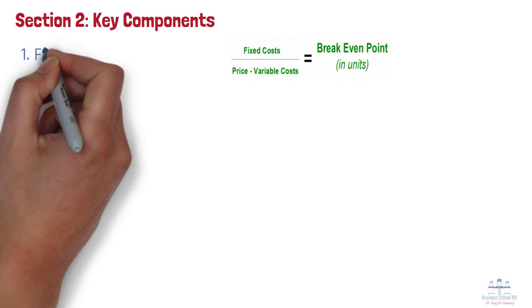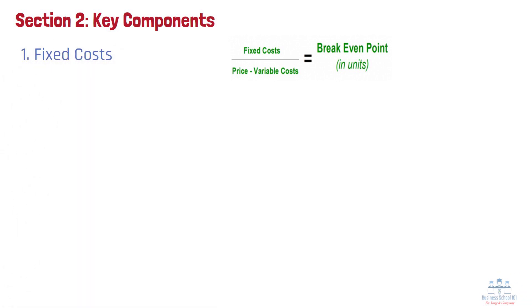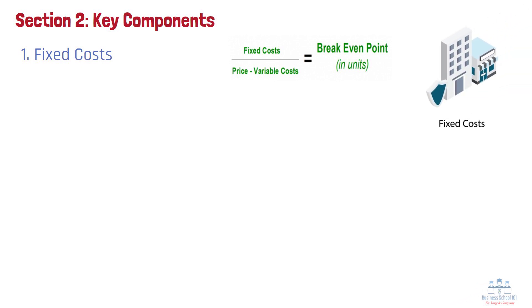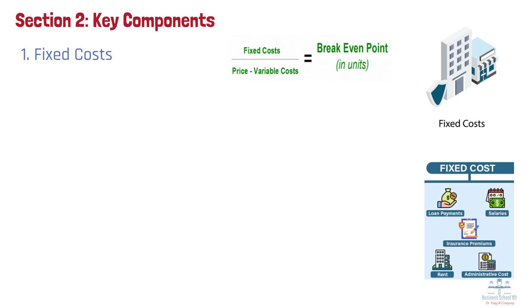Number 1: Fixed costs. Fixed costs are expenses that remain constant regardless of how many units a company produces or sells. These costs must be paid even if no products are sold. Examples include rent, salaries, insurance, utilities, and equipment depreciation.